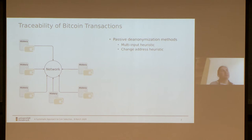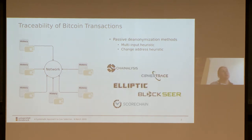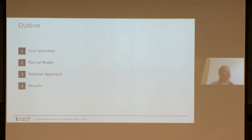The topic of traceability of Bitcoin transactions comes from the paper by Sarah Meiklejohn and others, published in 2013. That research introduced two heuristics commonly known as multi-input and change address heuristics. These heuristics have been used for de-anonymizing Bitcoin users and by blockchain forensic companies. When we talk about traceability, it's not only about anonymity with regards to private companies, but also with regards to transaction parties. This brings us to the question of coin selection.